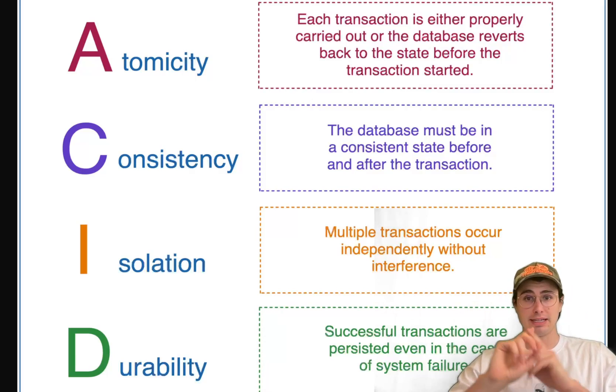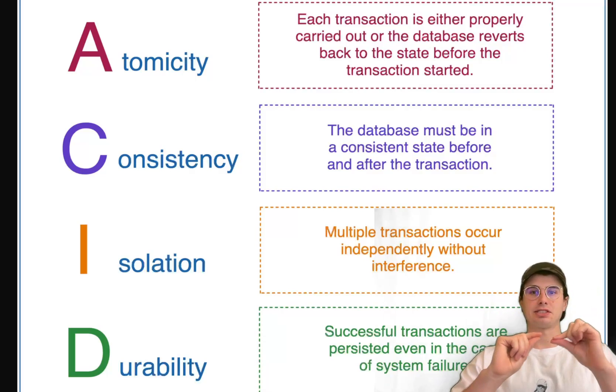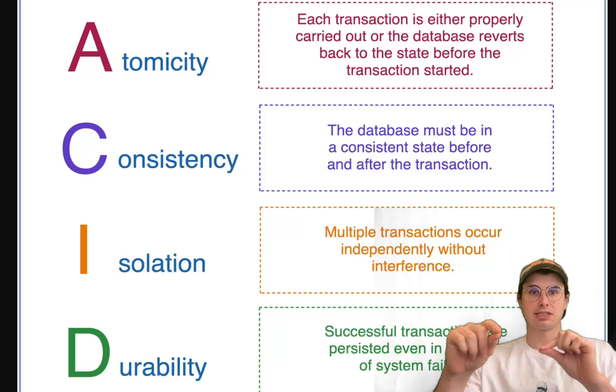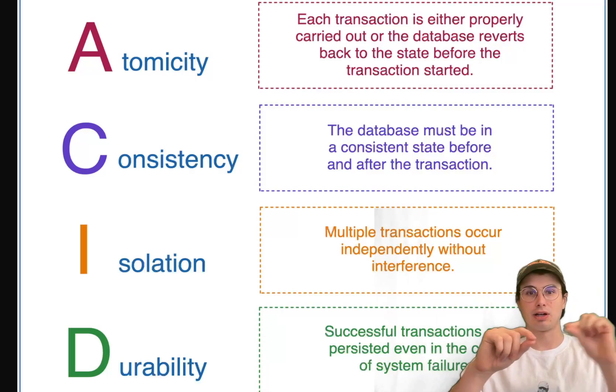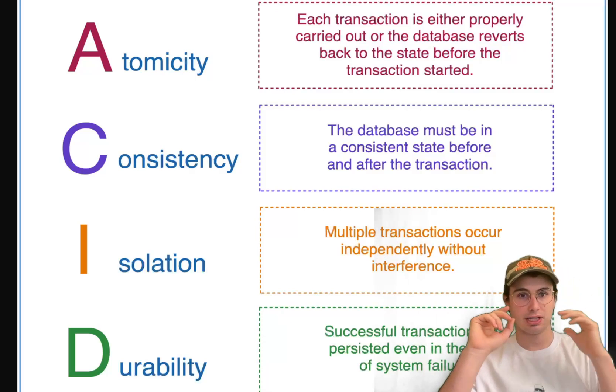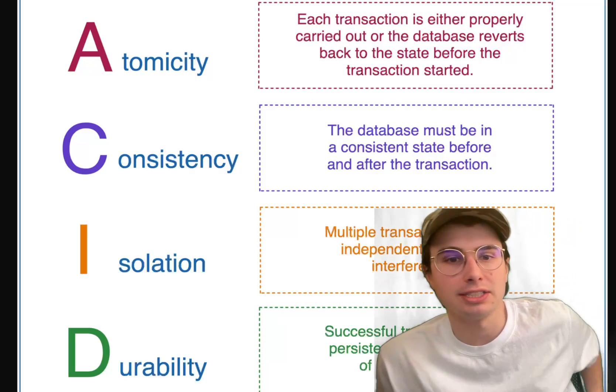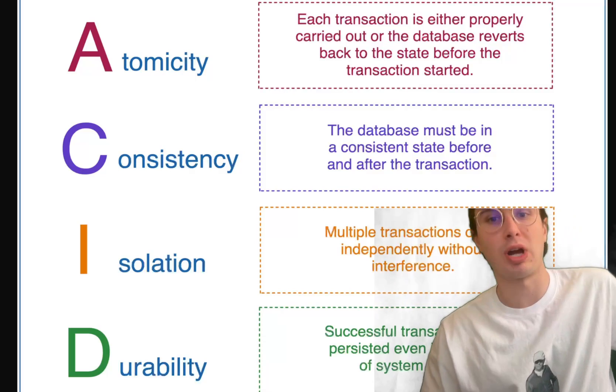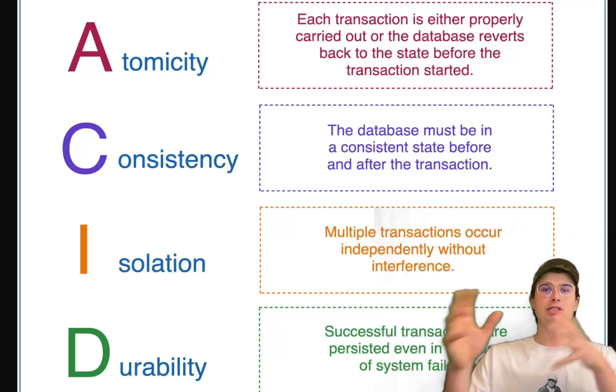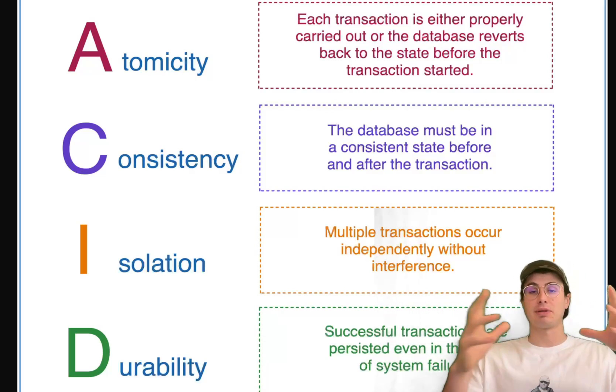And then each of them individually, you have atomicity and that is that each transaction must be treated as a single unit. So each, let's say I buy an item, that transaction is a single unit that either completes in its entirety or does not complete at all. So that means that if for some reason part of my transaction fails, like my credit card number is invalid, then the entire transaction fails and no data is brought into the database.